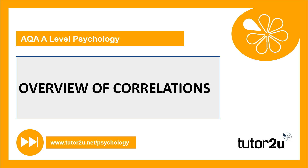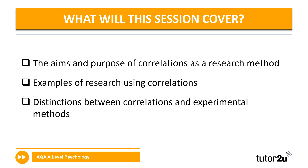Let's take a look specifically at what you're going to be doing. We'll be considering what the aim of a correlational piece of research is as a research method, looking at some examples of research that employ correlations, and importantly, distinguishing between correlations and experimental methods.